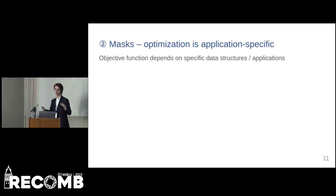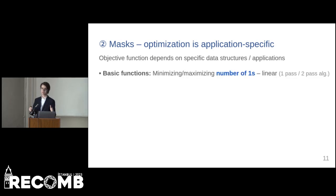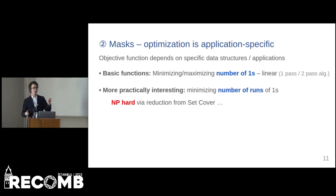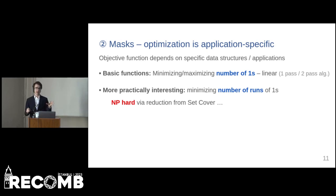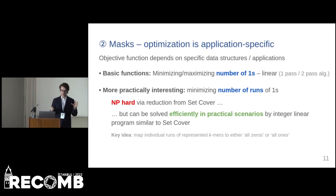The objective for mask optimization depends on the needs of specific data structures or downstream applications. We investigated basic objectives such as minimizing or maximizing the number of ones in the mask, which can be done in linear time. We also focused on minimizing the number of runs of ones in the mask, as this directly corresponds to minimizing the number of sequences in the previous representations. We showed that this is NP-hard by reduction from set cover. However, in practical scenarios of genomic data, it can be solved very efficiently using integer linear programming.